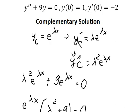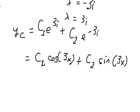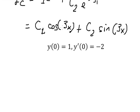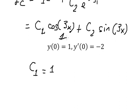Now we apply the initial conditions. When s equals zero, we substitute zero in here. So we have c1, and c1 equals 1. Because the sine term gives zero and the cosine term gives 1, that's why we have only c1 equal to 1.